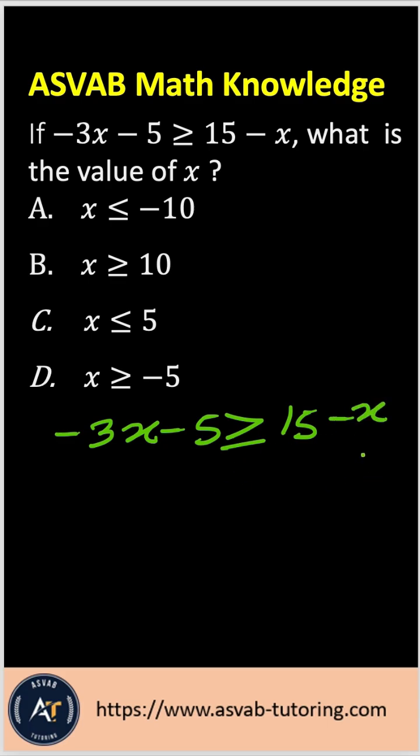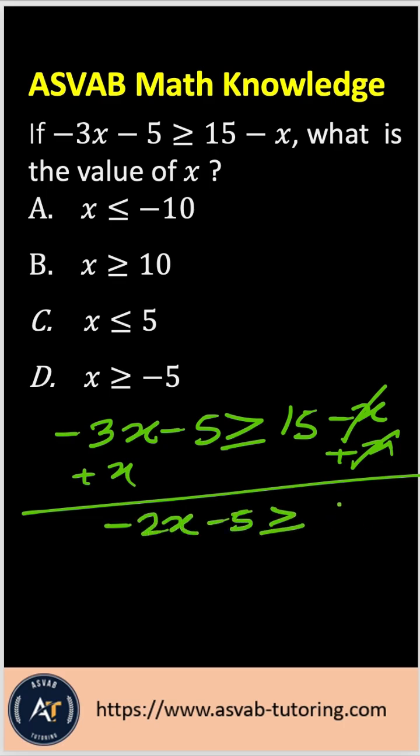The first thing I'm going to do is add both sides by x. The x's cancel out, so this side you have negative 2x minus 5 greater than or equal to 15.